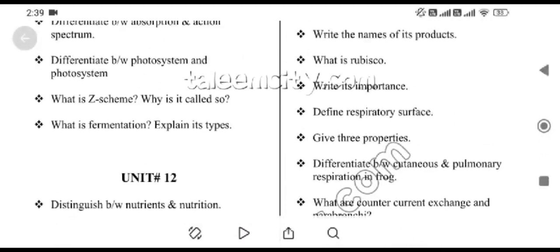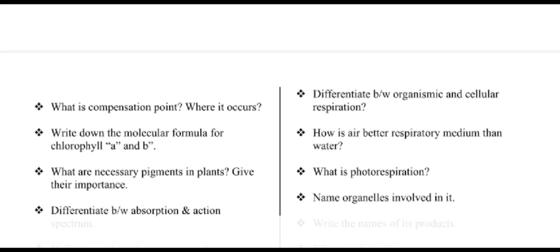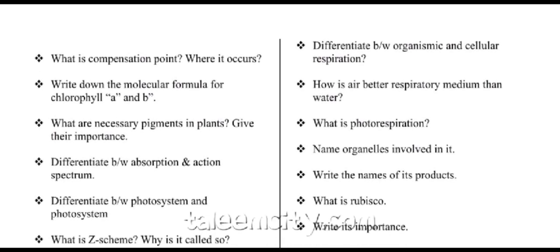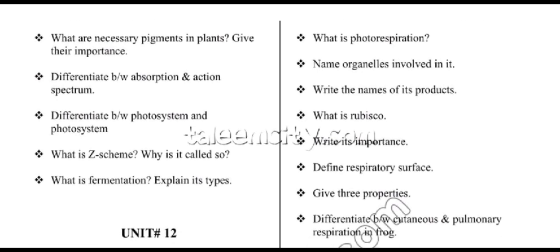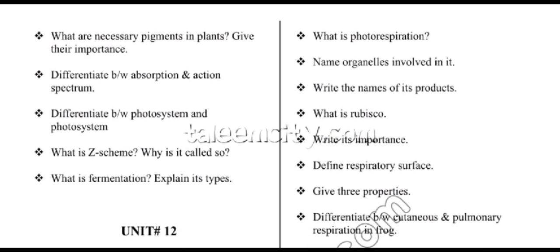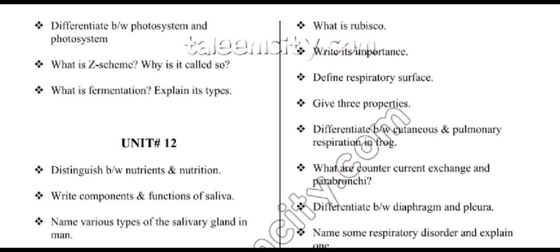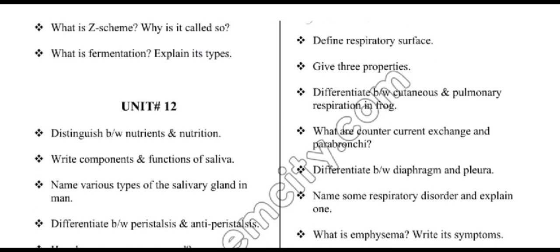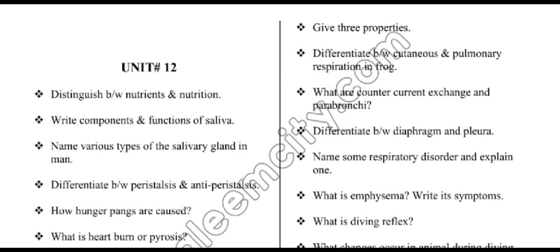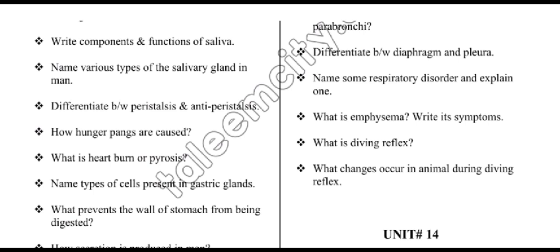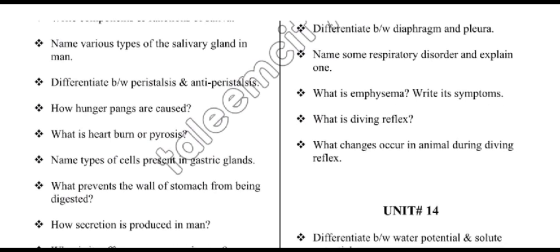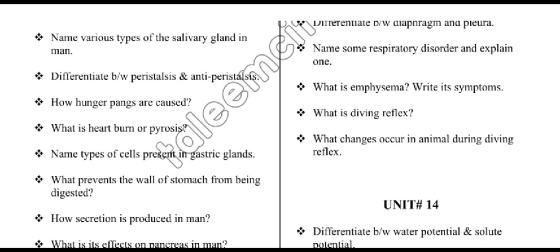From unit number thirteen, we have: differentiate between organismic and cellular respiration; how is air a better respiratory medium than water; what is photorespiration; name organelles involved in photorespiration and write the names of its products; what is RuBisCO and its importance; define respiratory surface and its three properties; differentiate between cutaneous and pulmonary respiration in frog; what are counter-current exchange and parabronchi; differentiate between diaphragm and pleura; name some respiratory disorders and explain one; what is emphysema and write its symptoms; what is diving reflex and what changes occur in animals during diving reflex.